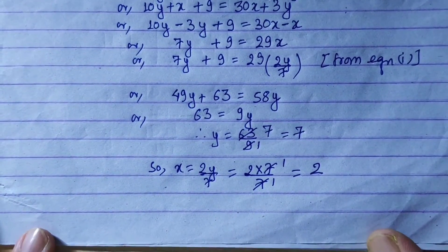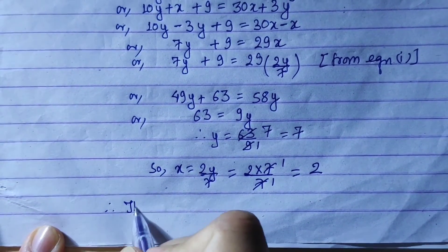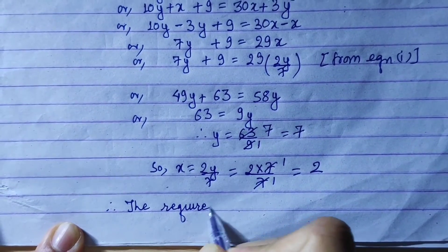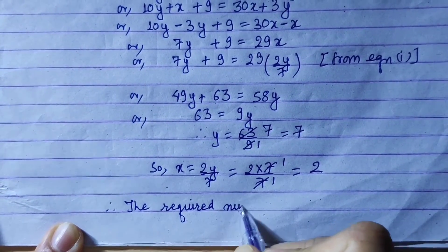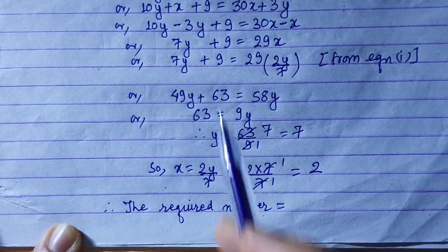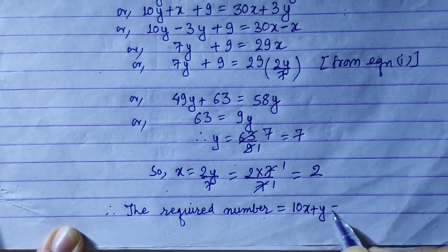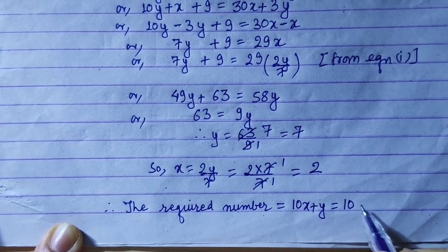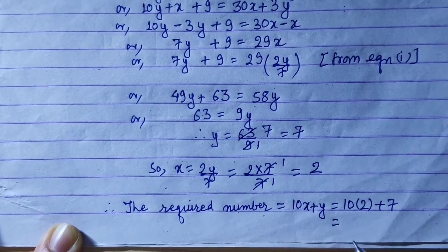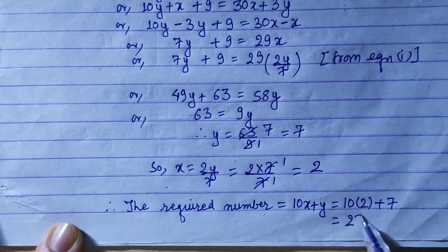So the original number is found. Therefore the required number is 10x plus y, which is 10 into 2 plus 7, which equals 27.